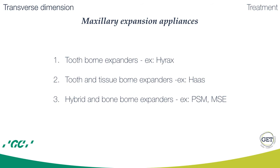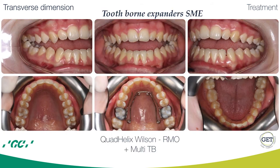Maxillary expansion appliances include tooth-borne expanders, the most known being the Hyrex expander; tooth and tissue-borne expanders such as the Haas; and hybrid or bone-borne expanders like the PSM or maxillary skeletal expander. The quad helix Wilson is used for slow maxillary expansion and has the advantage of vertical slots with very good torque control, providing approximately 500 grams of force per centimeter of expansion.